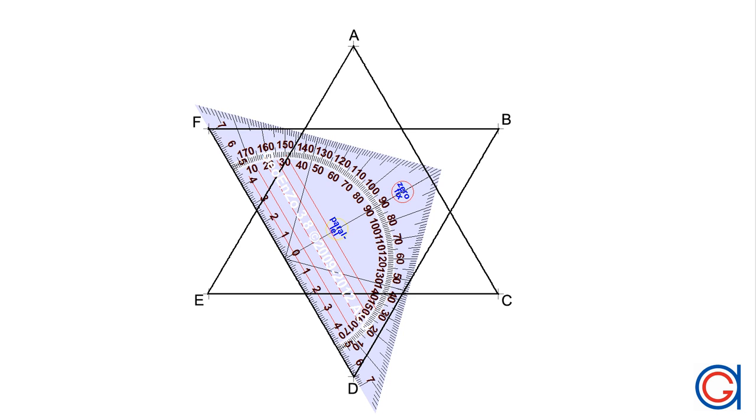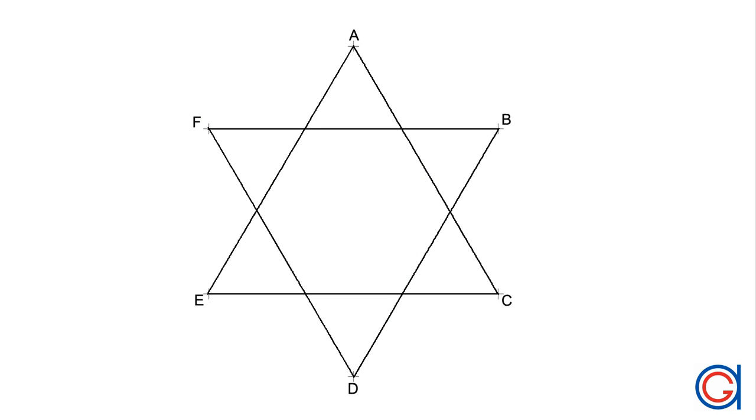So here we have our star of David or the six pointed Jewish star. So by pressing the following link, it shows you how to draw regular star shaped polygons with any number of sides. And it also explains their mathematical theory.